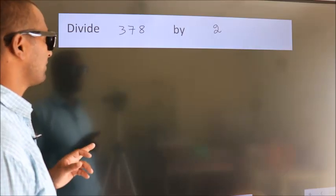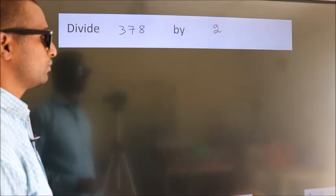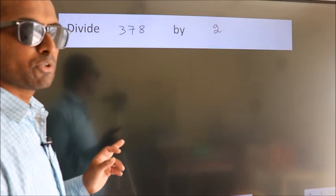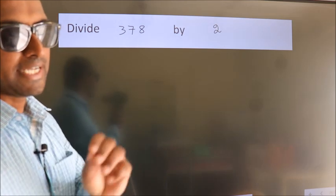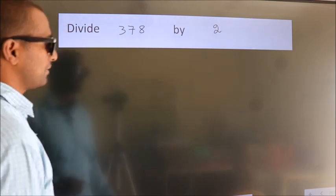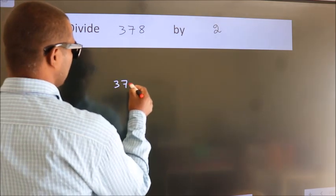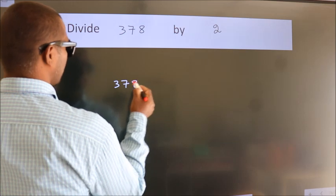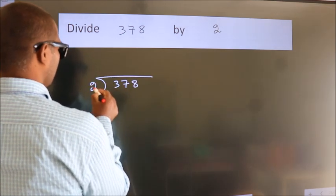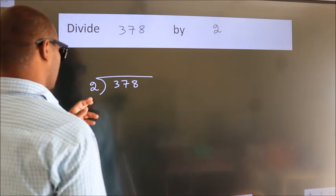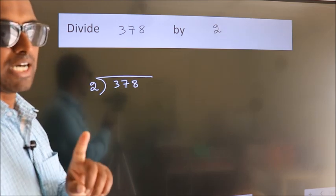Divide 378 by 2. To do this division, we should frame it in this way: 378 here, 2 here. This is your step 1.